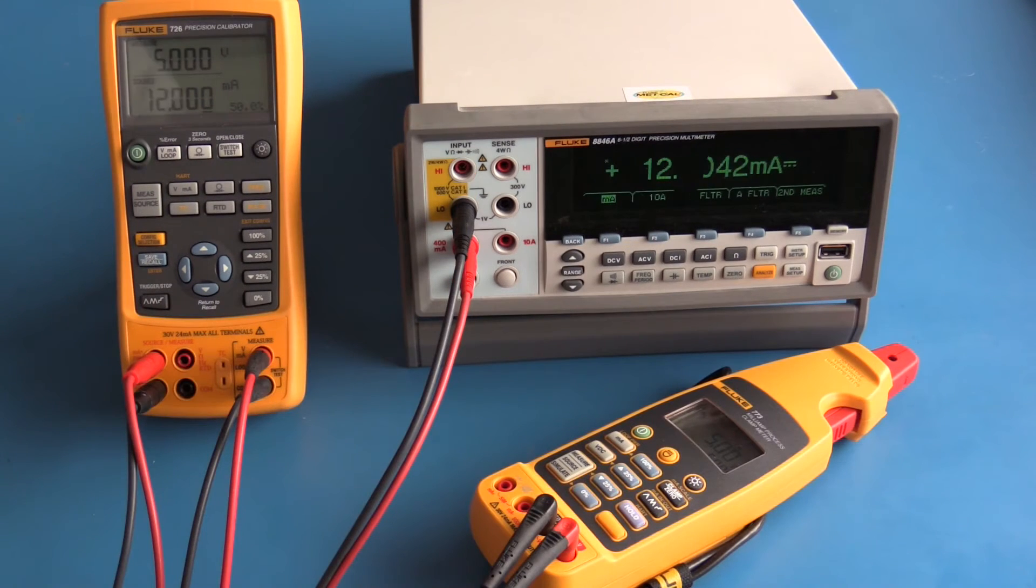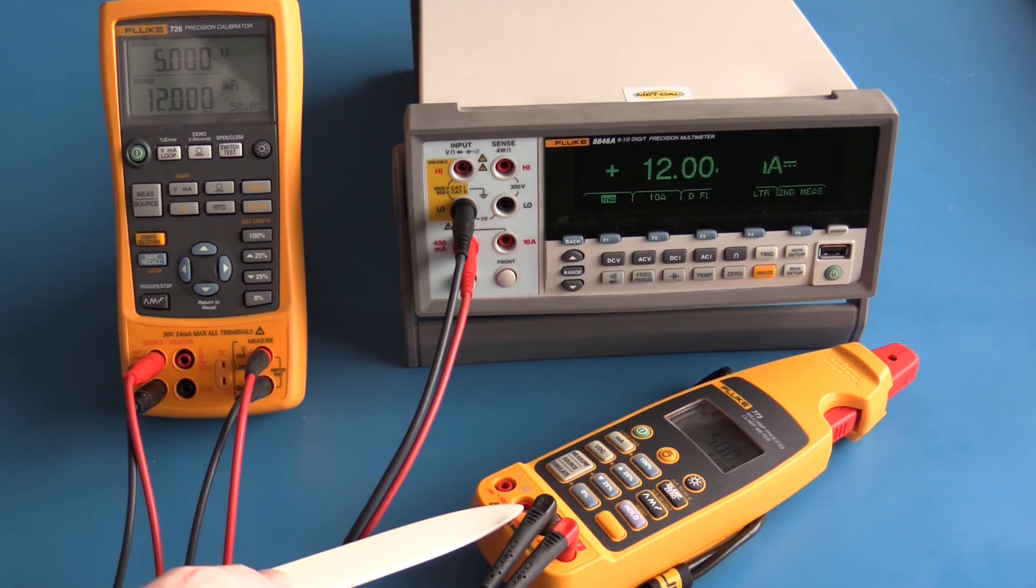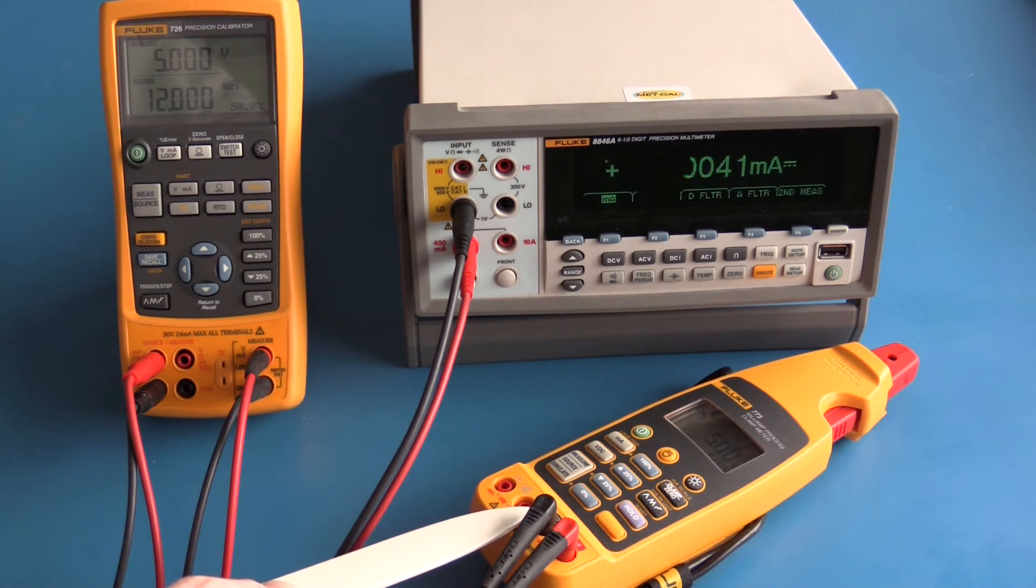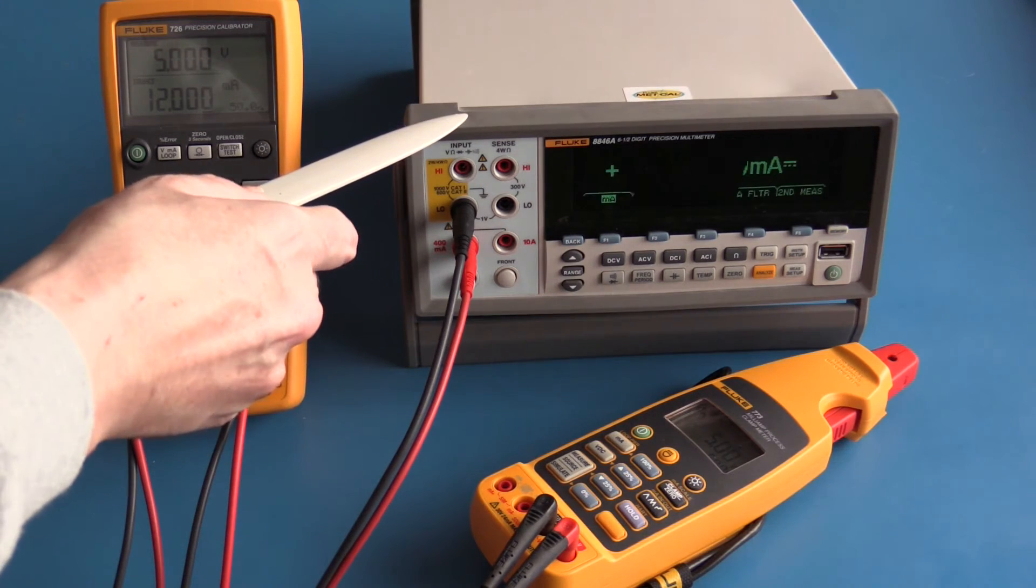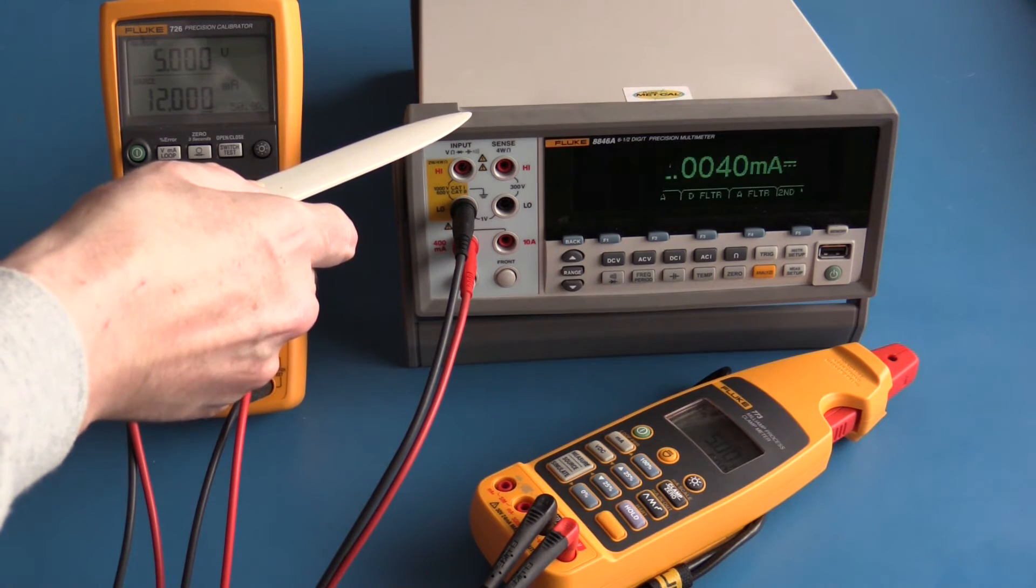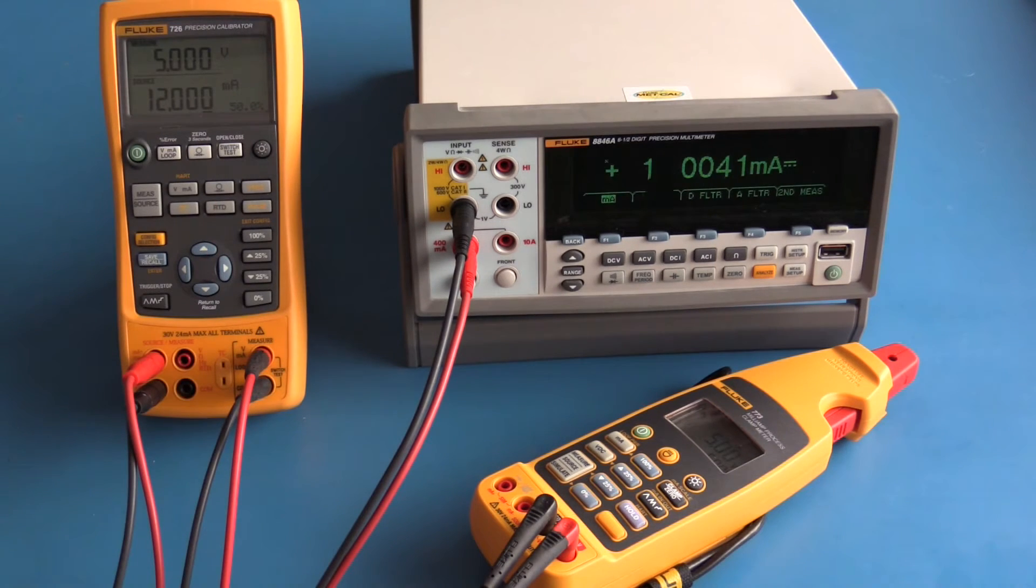The Fluke 726 is now set up to measure voltage and it will source 12 milliamps. The Fluke 773 is set up to source 5 volts which is being measured by the Fluke 726, and the Fluke 8846a is showing approximately 12 milliamps which is what the Fluke 726 is set up to source.